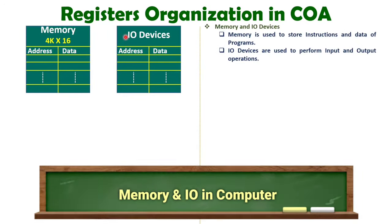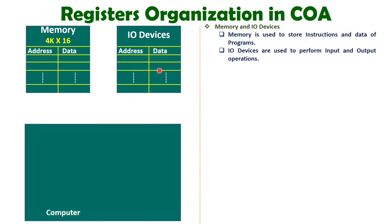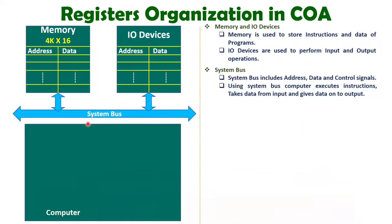Let us first see how memory and IO devices are arranged. Input devices are used to give commands to the computer, and output devices are used to see whether our output is coming properly, as well as to observe how exactly a program is getting executed. Memory is used to store the program. Here I have used a 4K×16 memory, meaning we have 4K number of addresses and at one address we have 16 bits of data. This memory and IO devices are going to be interfaced with the computer via the system bus.